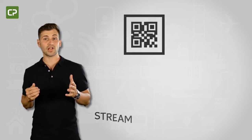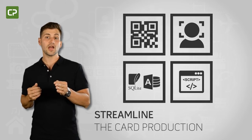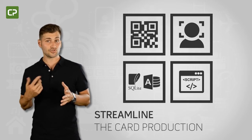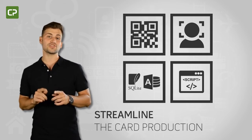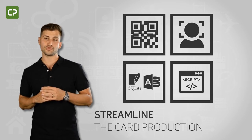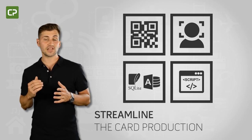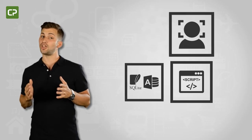XM Edition streamlines your photo ID printing needs by automating the photo editing process, connecting directly to your MS Access and SQLite database, and allowing you to personalize the card printing workflow through script. These features translate into fewer mistakes, greater efficiency, better service and security, and a lot of time saved.